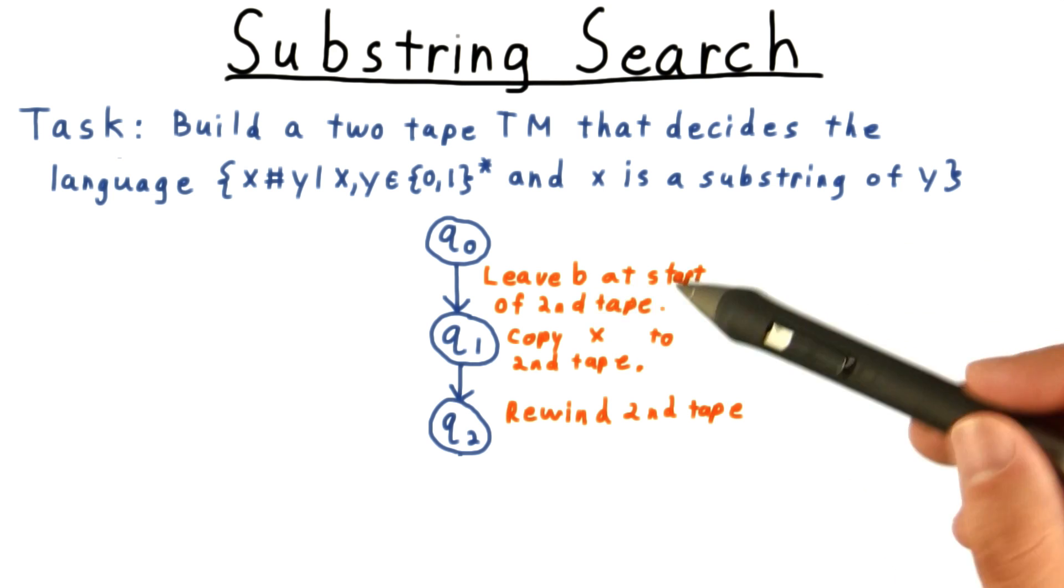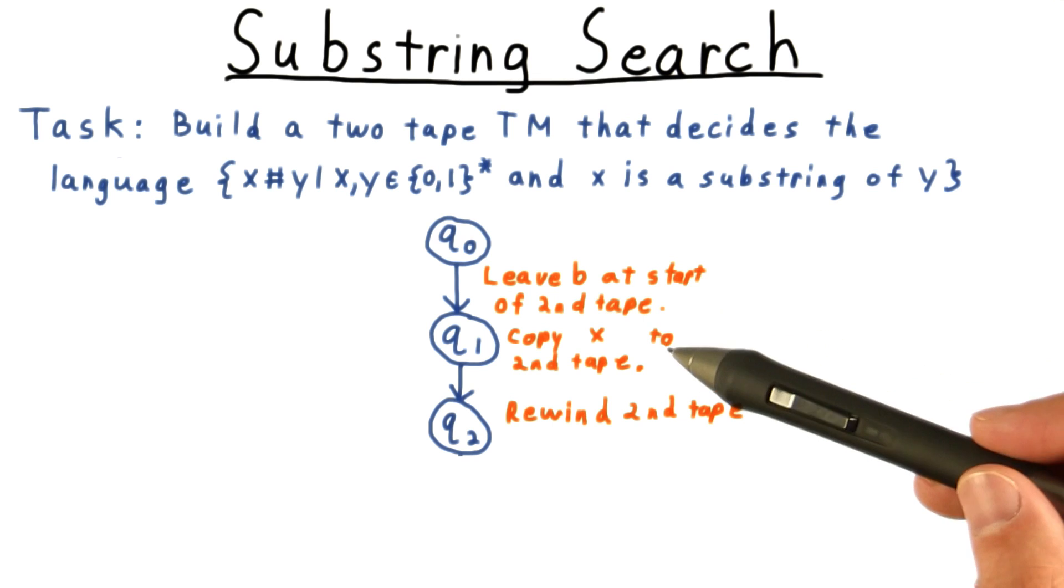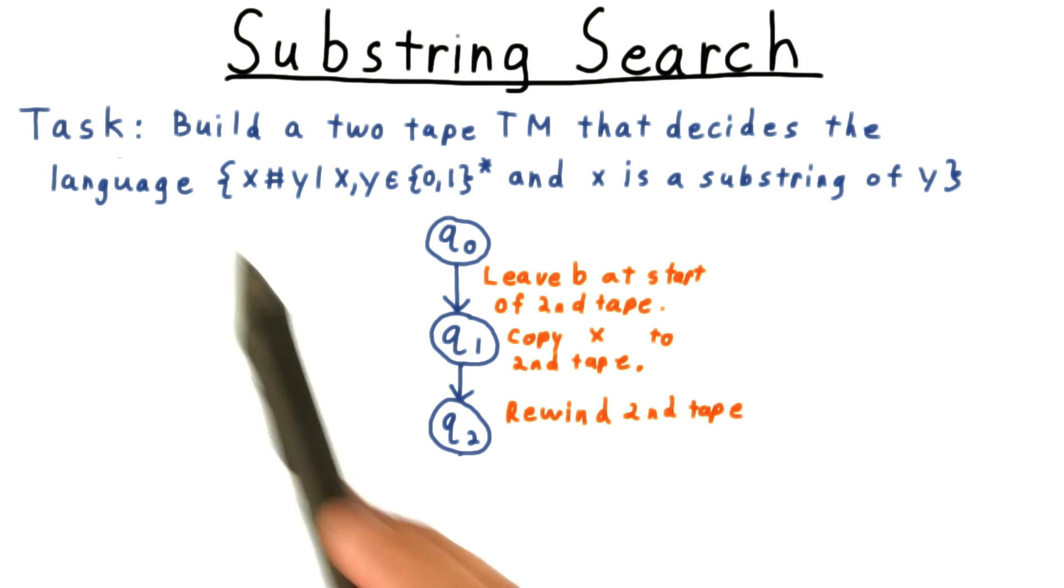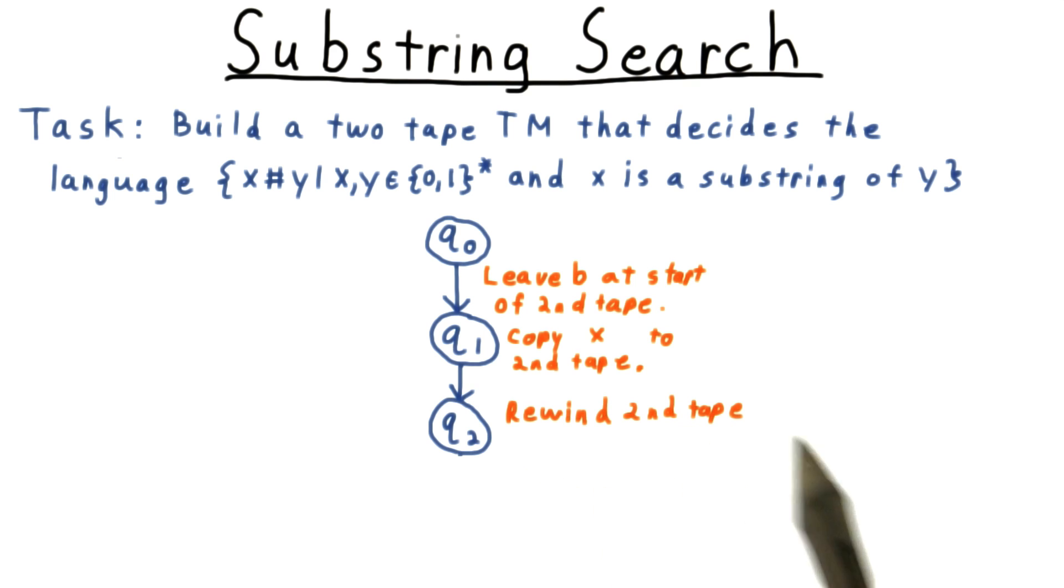We first write a blank to the second tape. Then we copy the first part of our input string to it, the x part. And then we rewind the second tape.